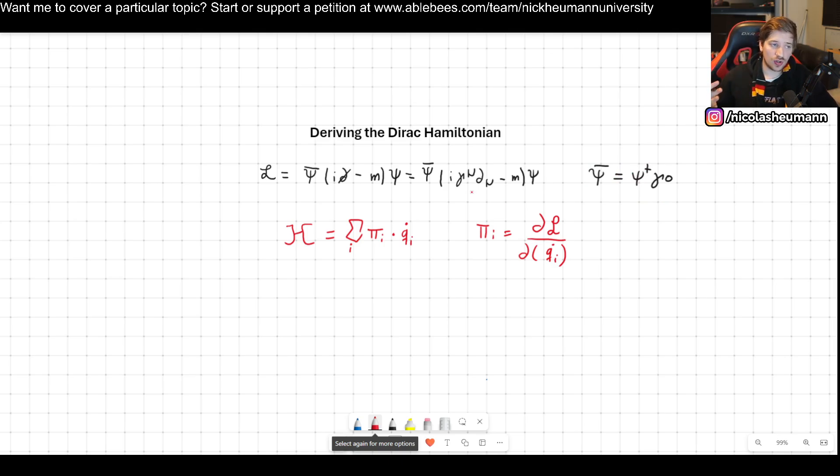So how do we go from the Lagrangian to the Hamiltonian? Well, we apply this little Legendre transformation. What we have to do is find our canonical momenta, multiply them by qi dot. In this case, they're going to be psi and psi bar dot, of course.